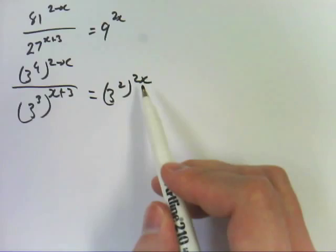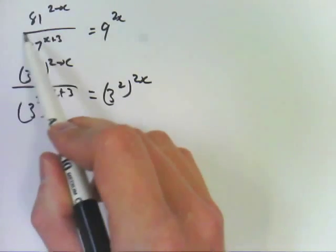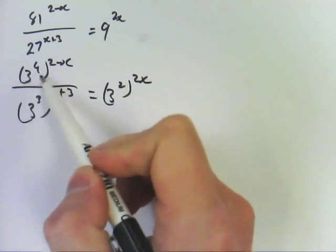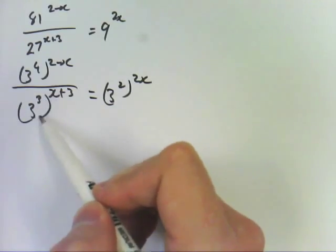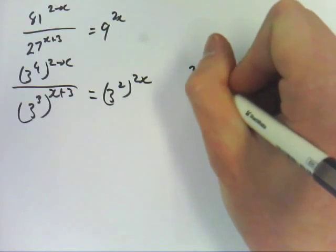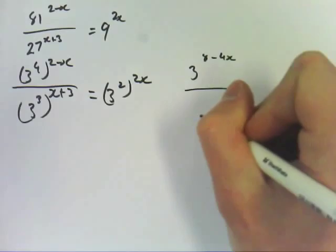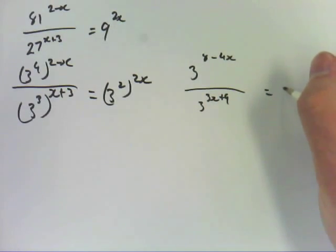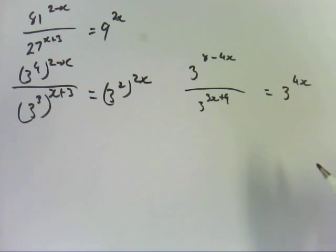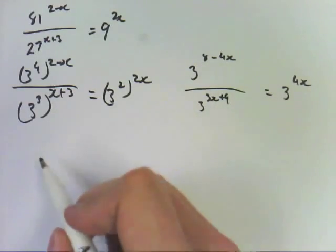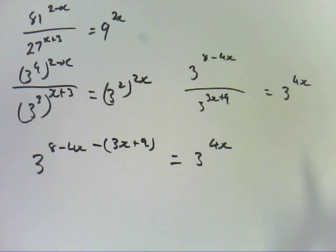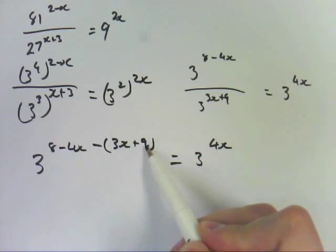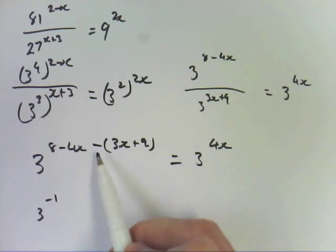So, we're chasing the base 3. 81 is 9 squared. And if each 9 is 3 squared, then 81 is 3 to the 4. 3 times 3 times 3 times 3 is 81. 9 squared times 3 will get you 27. So, 3 to the 3 is 27. Now, you just expand all your brackets. So, you get 3 to the 8 minus 4x divided by 3 to the 3x plus 9. And that apparently has to equal 3 to the 4x. Now, we're using index laws again. We've got to divide here. Same base indices. So, we're going 3 to the 8 minus 4x minus 3x plus 9. And that has to equal 3 to the 4x.